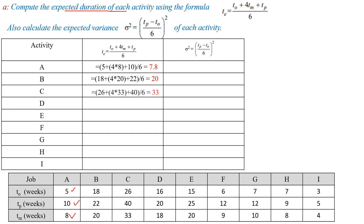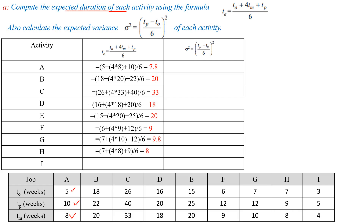Similarly, for activity C, Te = 33; activity D, Te = 18; activity E, Te = 20; activity F, Te = 9; activity G, Te = 9.8; activity H, Te = 8; and activity I, Te = 4.